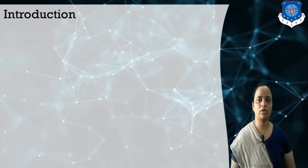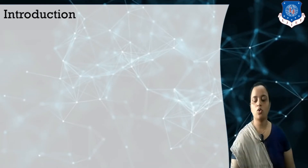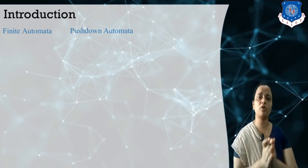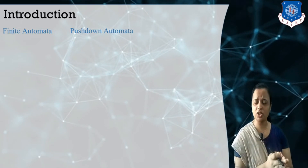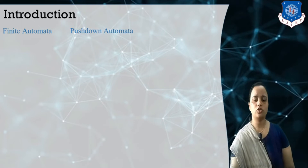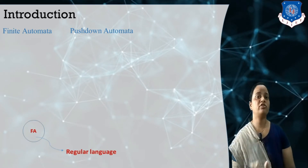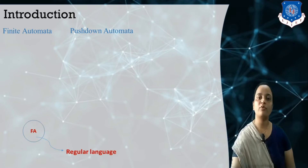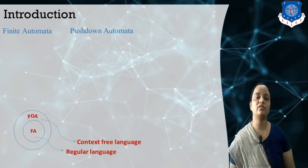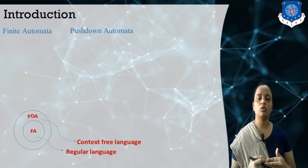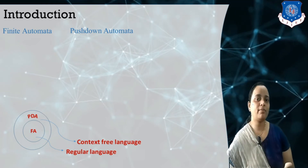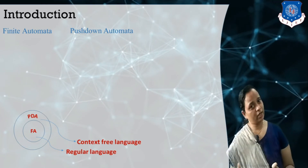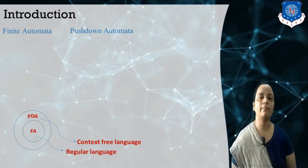Now let's start with the introduction. What is a Turing machine? As we know, in the previous video we already discussed finite state machines and pushdown automata. Finite state machines accept regular languages. Pushdown automata accept context-free languages. The language not accepted by finite automata is context-free language, and it is accepted by the PDA.